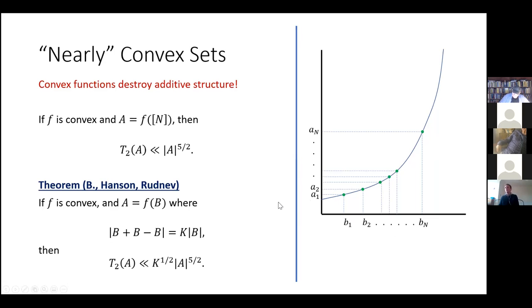And in this case, we managed to prove that the T2 energy of A is bounded above by K to the half times the size of A to the power of five over two, which essentially matches what we had in the previous result, if we were to set B to be the first N integers. But in addition, this gives us a way of quantifying how much worse our bound gets if our set becomes a little bit when it stops exhibiting additive structure. The other thing that's quite nice about this result is that it's actually tight. We can come up with a set A, which is going to be, you know, I guess a set B and a function F, where the T2 energy is actually equal to this upper bound. And this was not previously known.